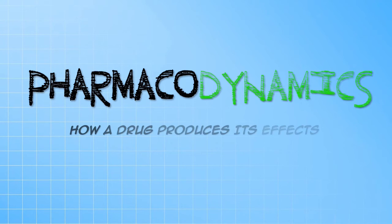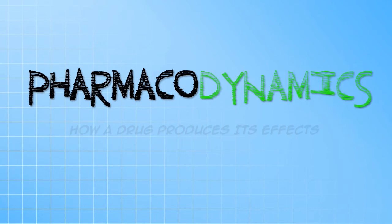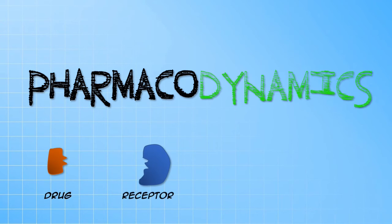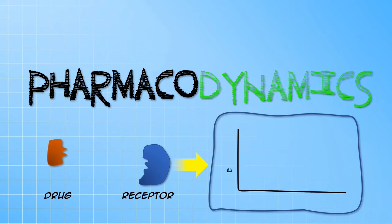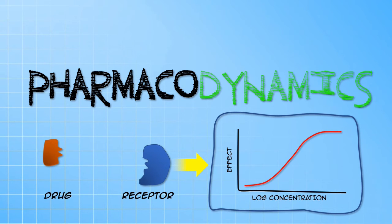Pharmacodynamics, on the other hand, is the study of how drug molecules produce their effects. Essentially, drug effects are produced by the highly specific interaction between the drug molecule and its receptor. When this occurs, it starts off a series of events that will result in the drug effect. The intensity of drug effect depends on the nature of the drug molecule and the receptor, and is often dependent on the concentrations of the drug at the site of action.